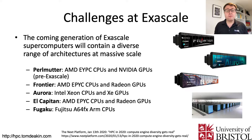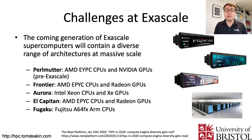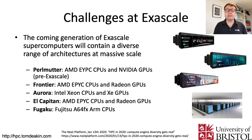Performance portability is really important if we look at the upcoming exascale systems being installed over the next 18 months to two years. We can see a huge diversity in processor technology — CPUs and GPUs from different vendors. In the United States we have Perlmutter, Frontier, Aurora, and El Capitan in the pre-exascale and exascale range, with CPUs from Intel and AMD and GPUs from NVIDIA, AMD, and Intel.